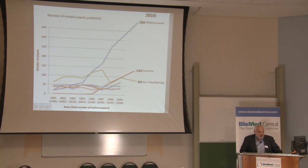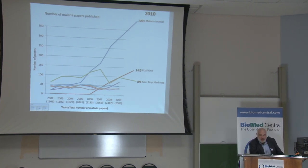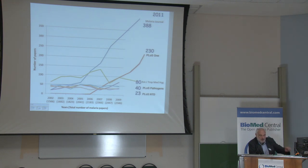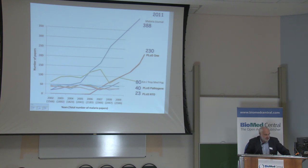We followed that up in 2010, when Malaria Journal had moved to 380. But there a new journal had started to show — PLOS One — which in 2010 had 145 articles on malaria, and in 2011 moved to 330. The two other PLOS publications also have quite a number. These are all open access journals, while the traditional journals have remained essentially paper-based and subscription only, though becoming open access after a number of months of publication, which is a quite common model.